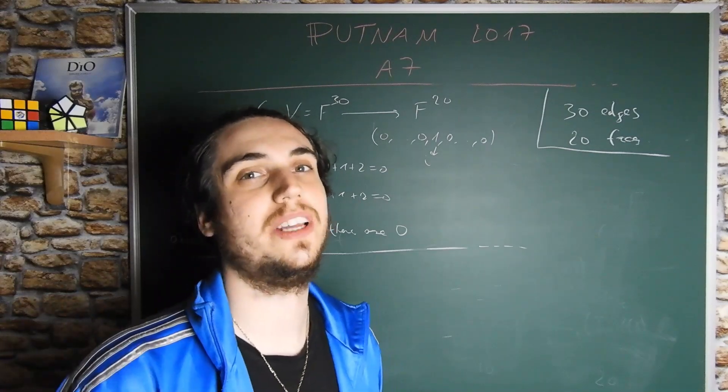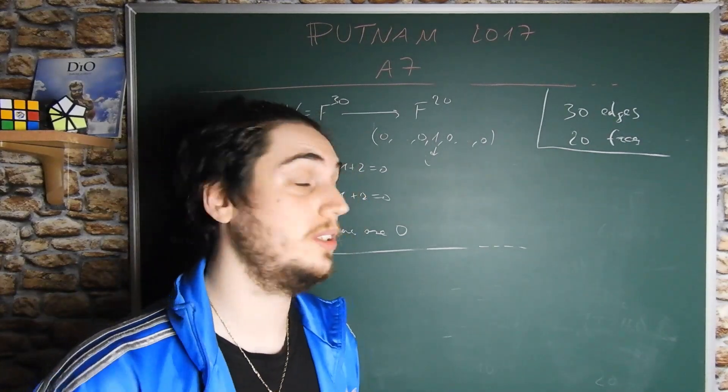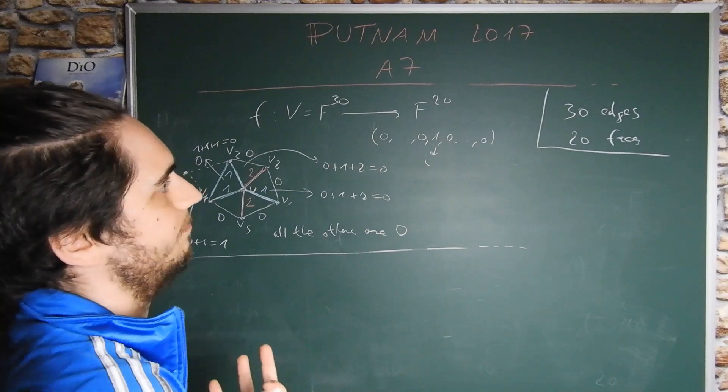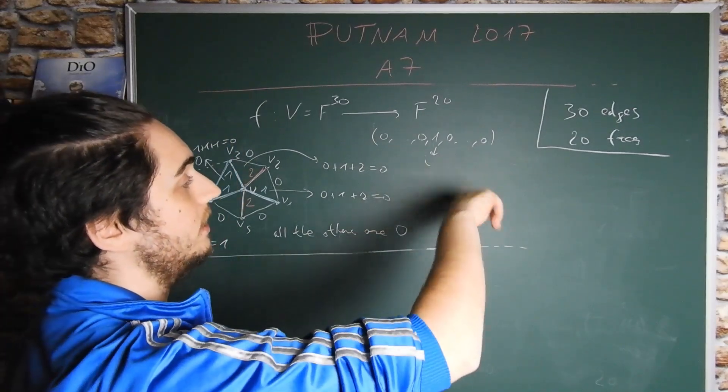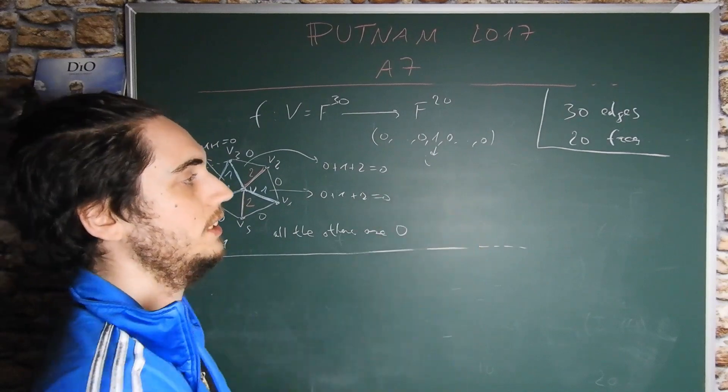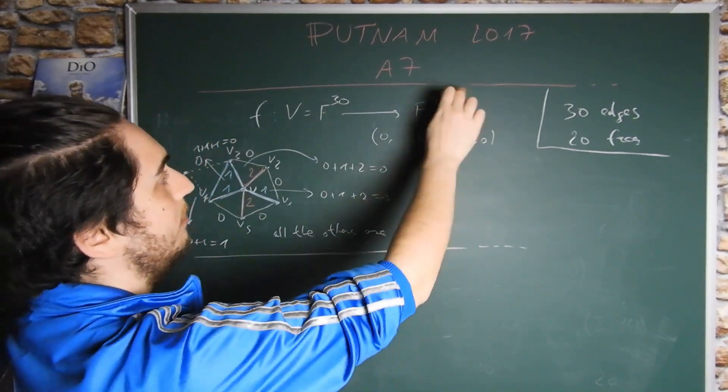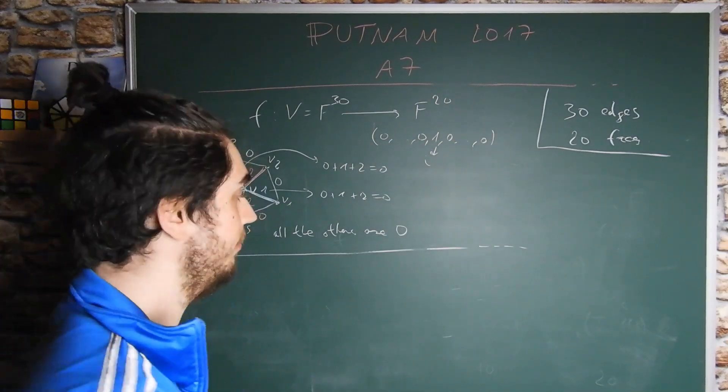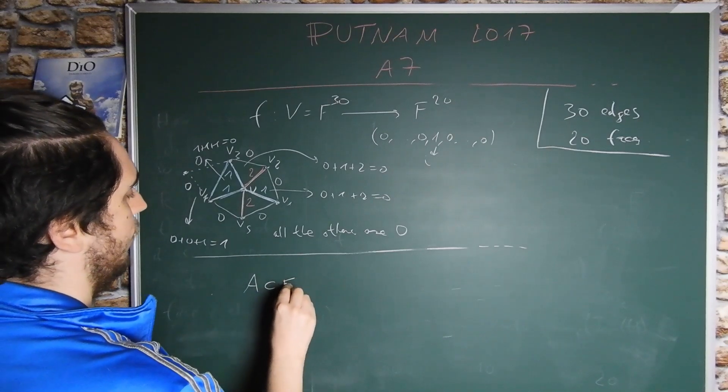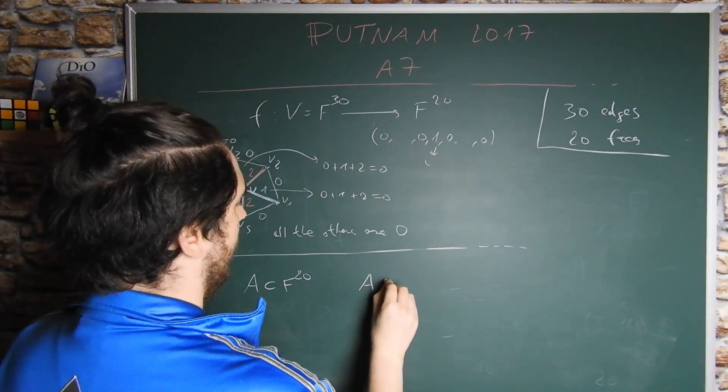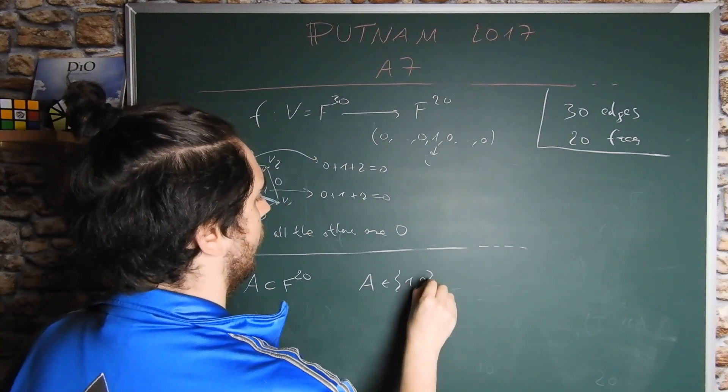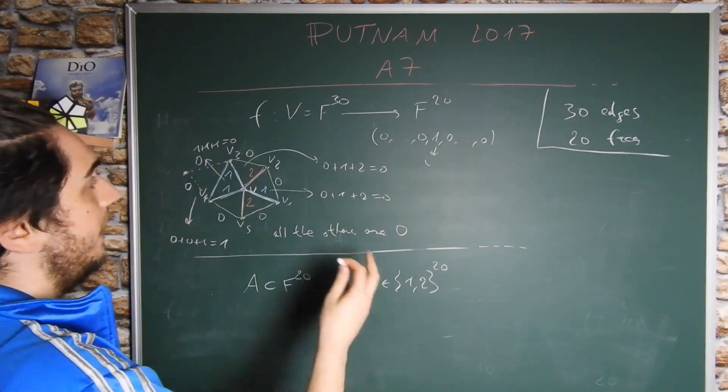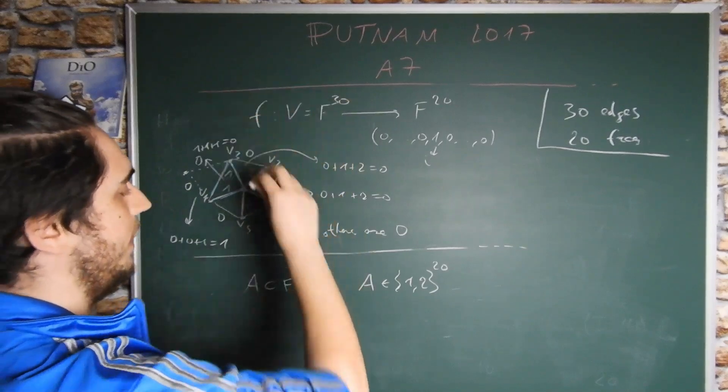Now that we have shown that the function is surjective, we can conclude. From our construction, it's easy to see that the image of our coloring, the coloring in which two edges are equal colored and the third is different, is the subset of F20 given by all the coordinates different from 0. So the set A in F20 is the set {1, 2} to the 20, all the points which have no coordinate 0, and the set of colorings is exactly the preimage of A.